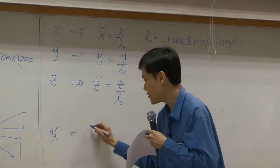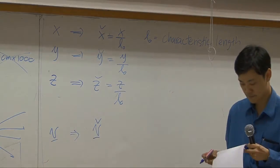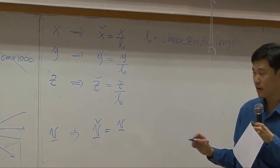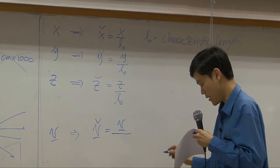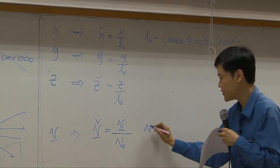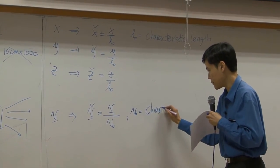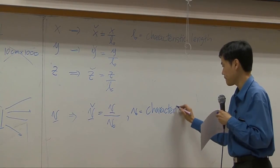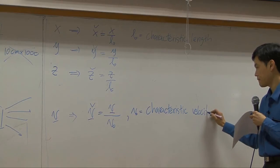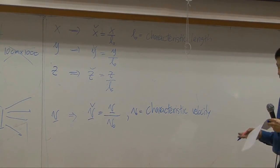So I'm going to define another velocity with no unit as the ratio of velocity, the actual velocity, divided by v0. V0 here is called characteristic velocity.